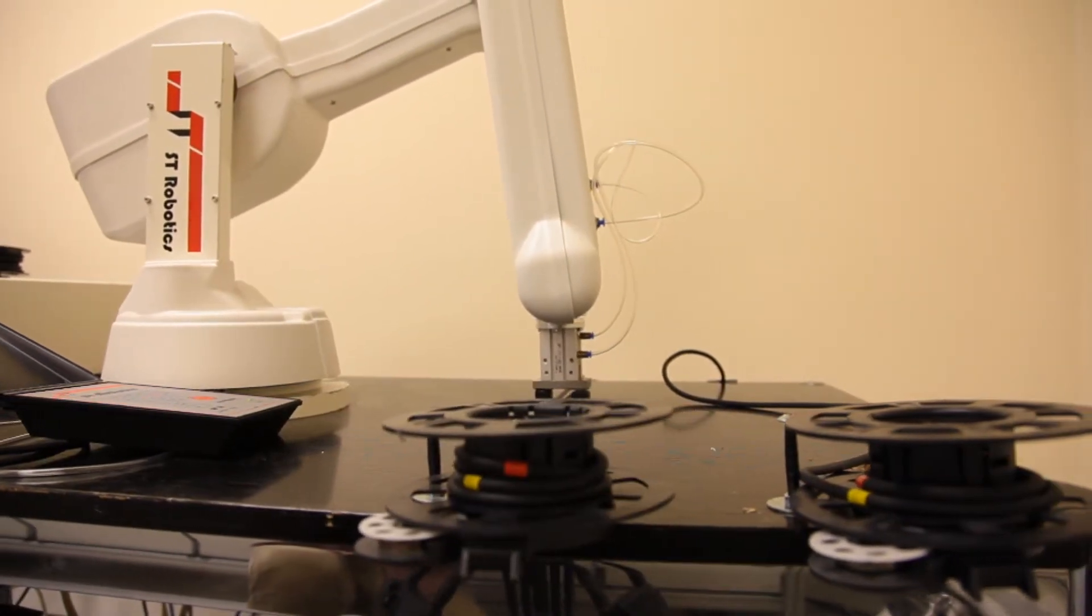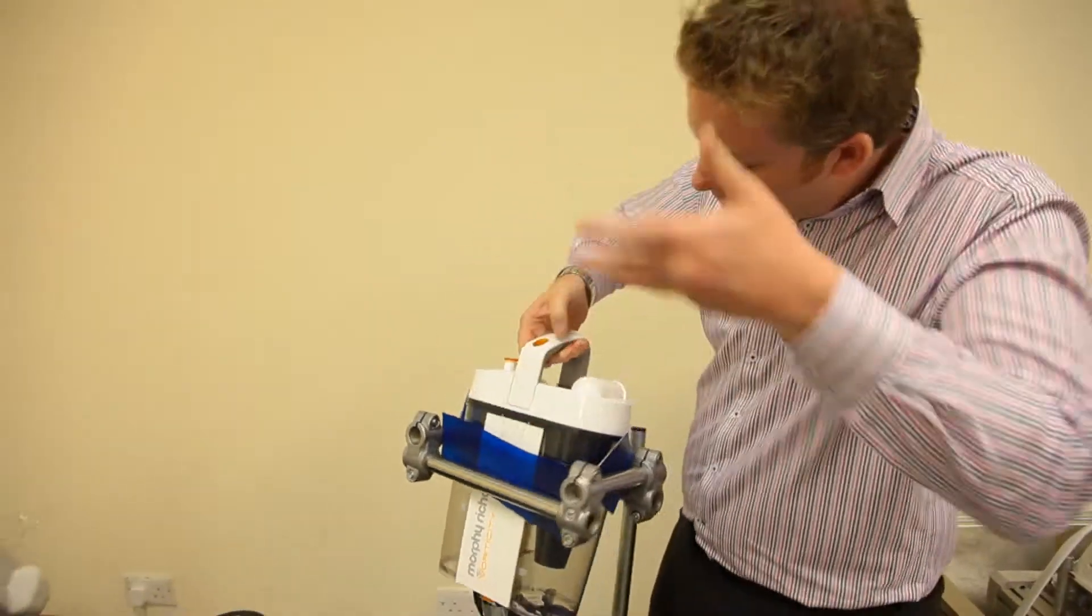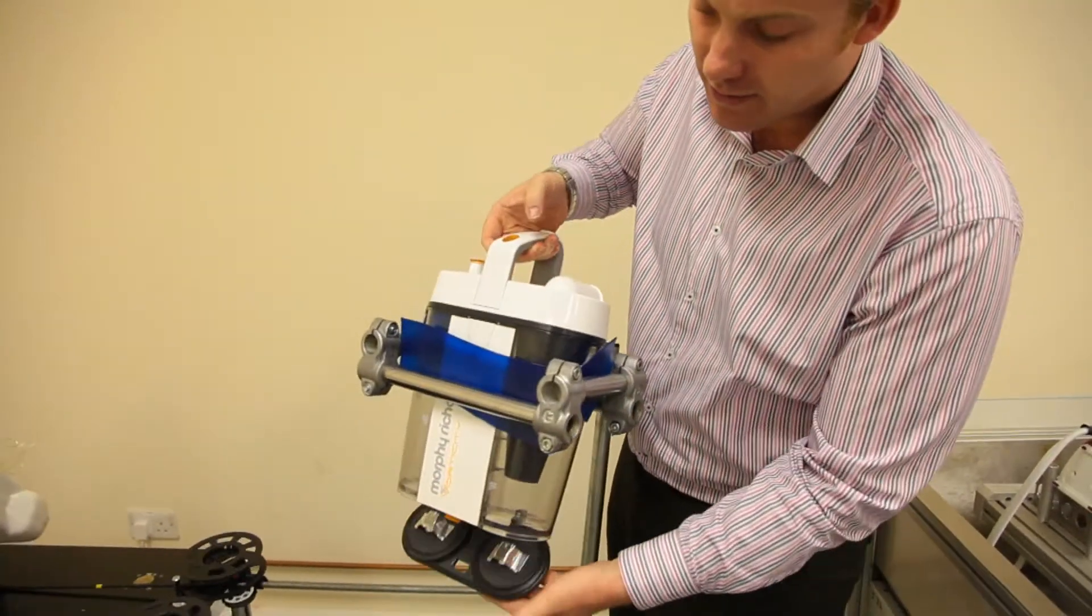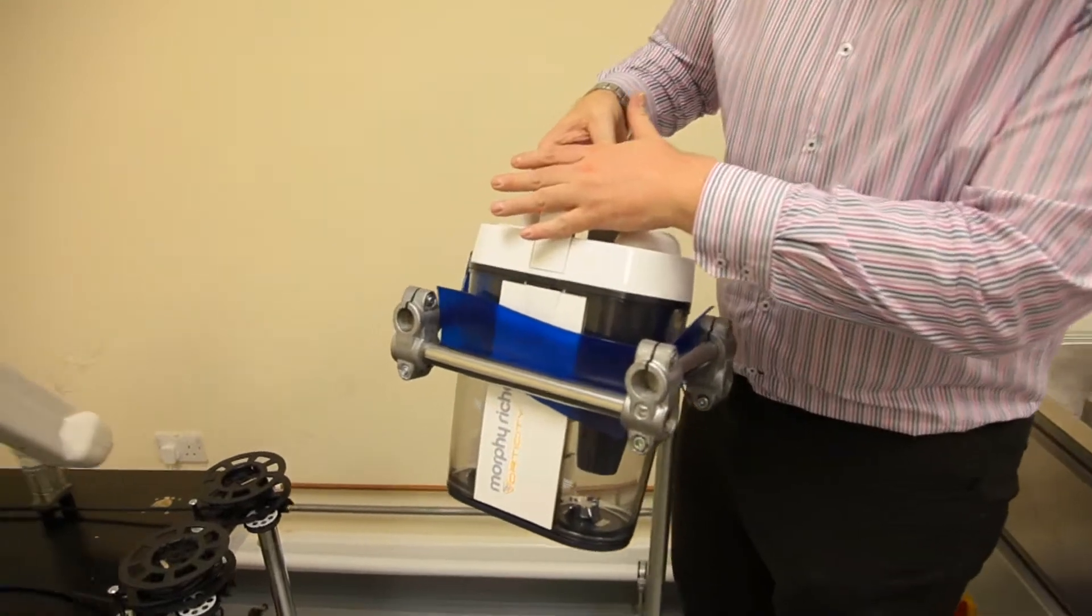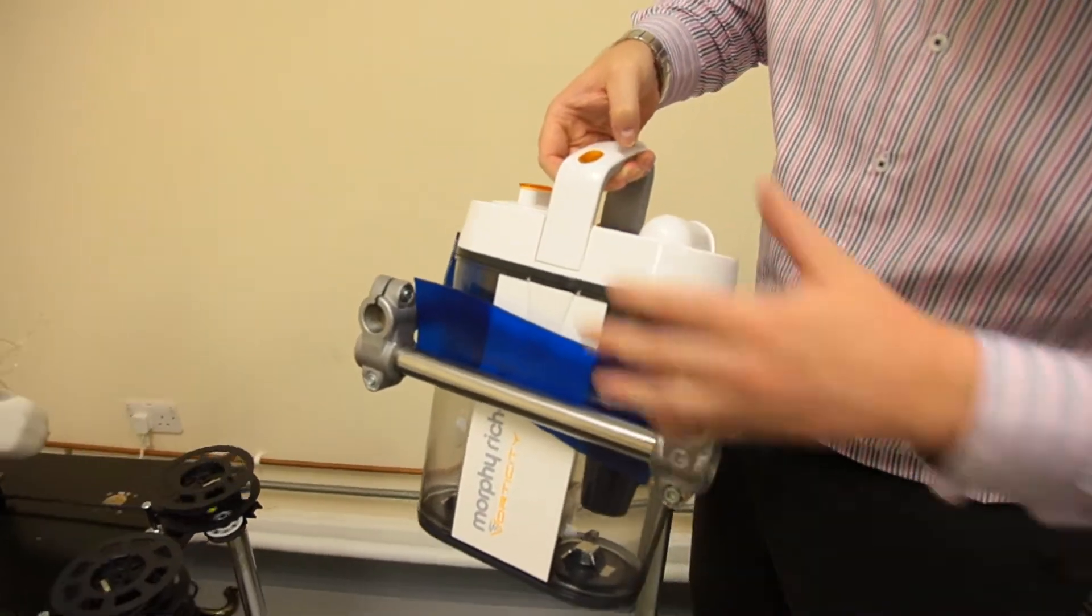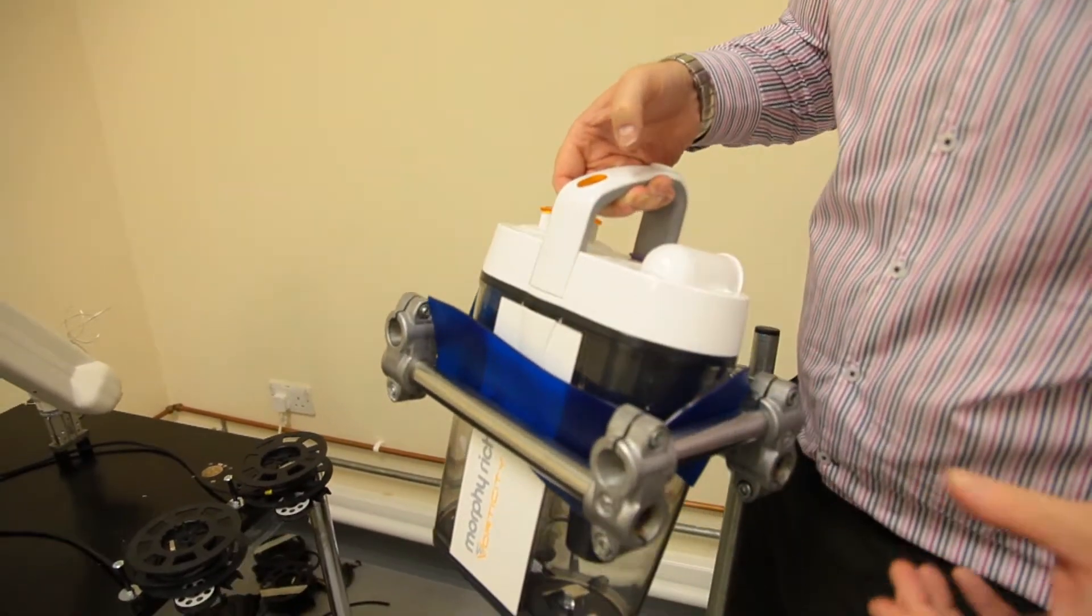So the robotic arm can come up under here, loop this around, and in this particular instance would test this mechanism around 25,000 times.